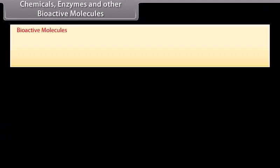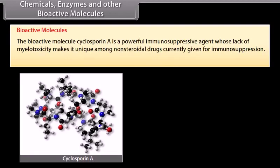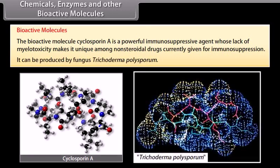Bioactive molecules. The bioactive molecule cyclosporine A is a powerful immunosuppressive agent whose lack of myelotoxicity makes it unique among non-steroidal drugs currently given for immunosuppression. It can be produced by the fungus Trichoderma polyspermum.